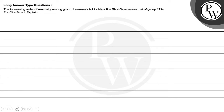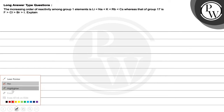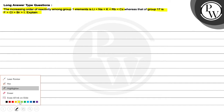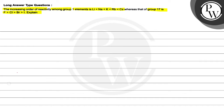Hello children, let's read this question. The question says the increasing order of reactivity among group 1 elements is lithium less than sodium less than potassium less than rubidium less than cesium, whereas that of group 17 is fluorine greater than chlorine greater than bromine greater than iodine. Explain. So here we have to explain the order of reactivity of group 1 and group 17.